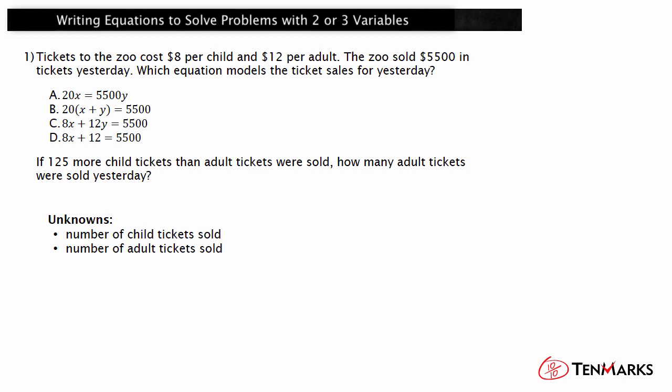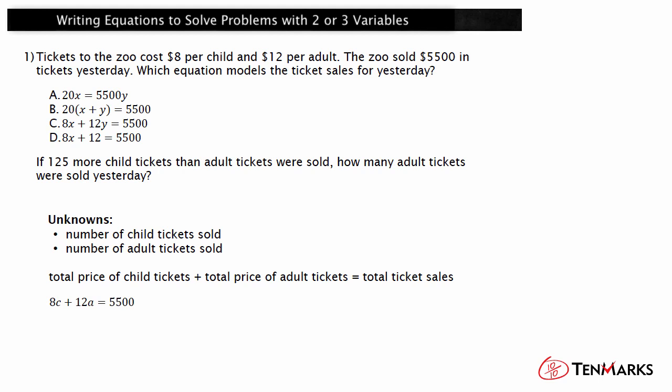How do you calculate total ticket sales? The total ticket sales is the total price of all the child tickets sold plus the total price of all the adult tickets sold. To find the total price of the child tickets, multiply $8 by the number of child tickets sold. To find the total price of the adult tickets, multiply $12 by the number of adult tickets sold. So, 8 times C plus 12 times A equals $5,500, with C and A being the number of child and adult tickets sold, respectively.